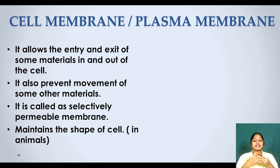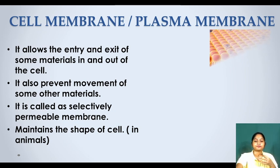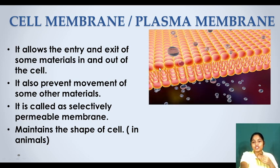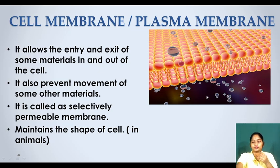The cell membrane maintains the shape of the cell in animal cells. It allows only selectable particles to move into the cell; some particles pass through and some are rejected.